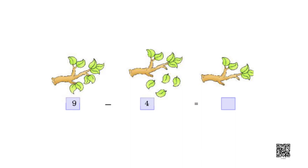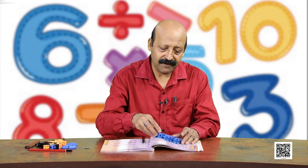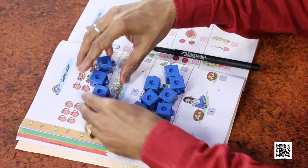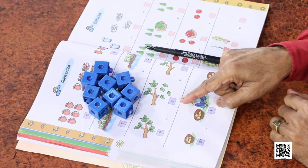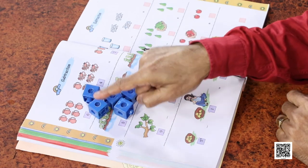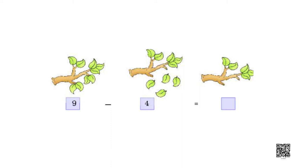Now try to find out what is 9 minus 4. A picture is given but I am not going to tell you - you have to tell me. If you have a problem, you can do the activity with objects. 9 objects: 1, 2, 3, 4, 5, 6, 7, 8 and 9. Out of 9, 4 has been taken away. How many are left? 1, 2, 3, 4 and 5. We can write: 9 minus 4 is equal to 5.